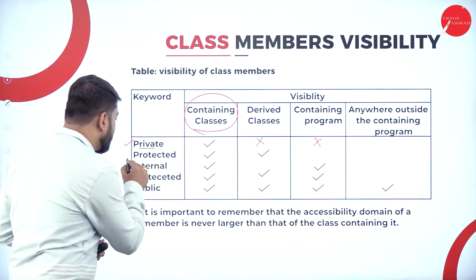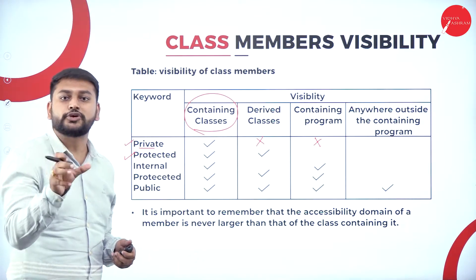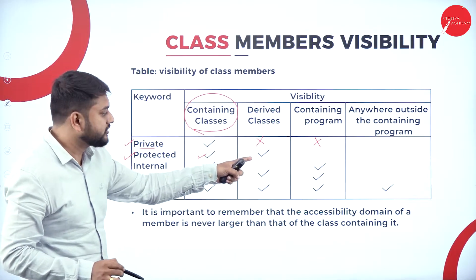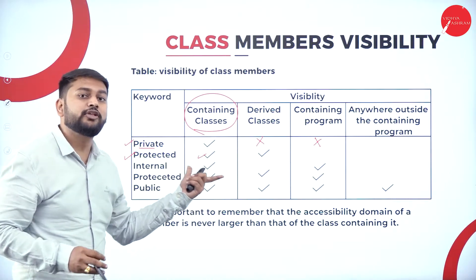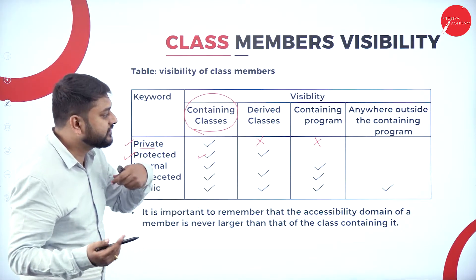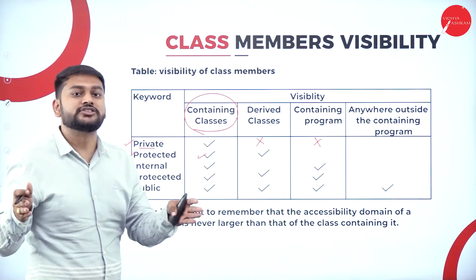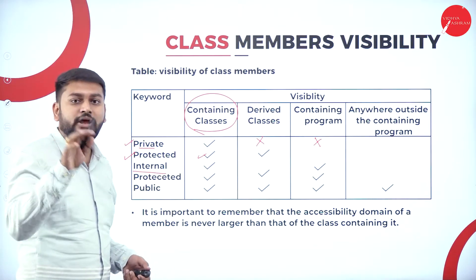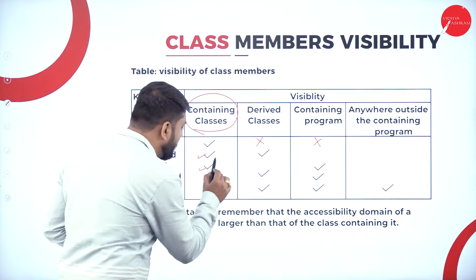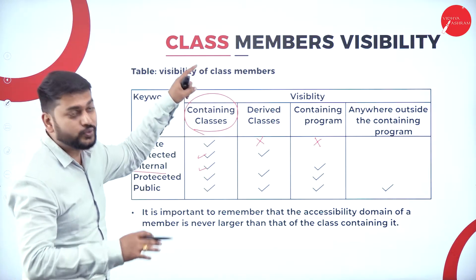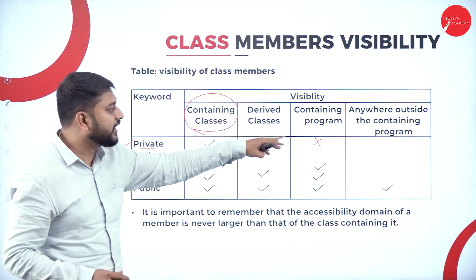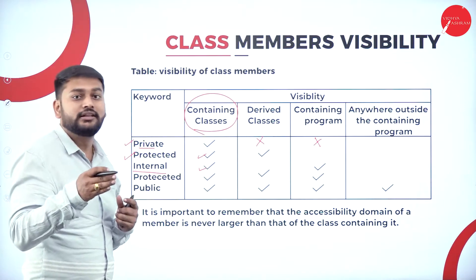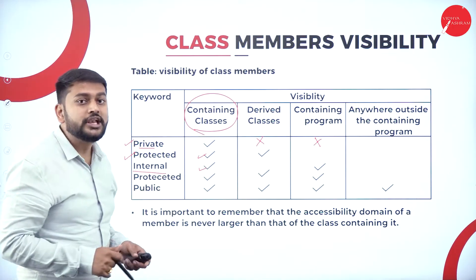In the same way, I have protected. When I define any class as protected, I will be able to access it within the containing class and the derived class. So only in two places will I be able to see it or it is visible. In all the other places, I will not be able to access it. When it comes to internal, I will be able to access it in the containing class, in the derived class, and also in the containing program - in three places.